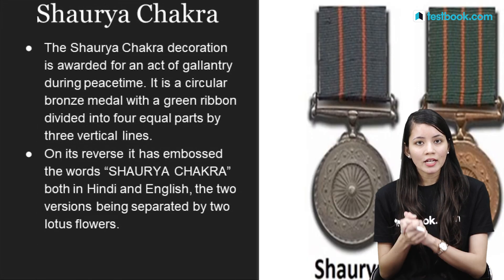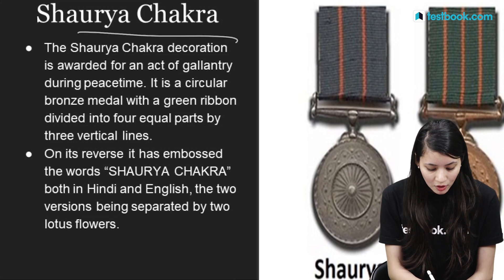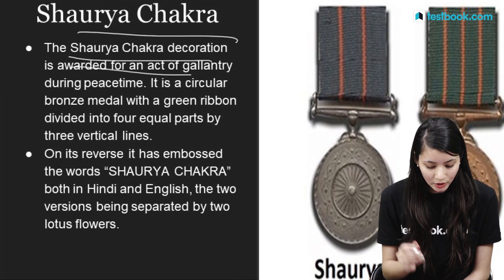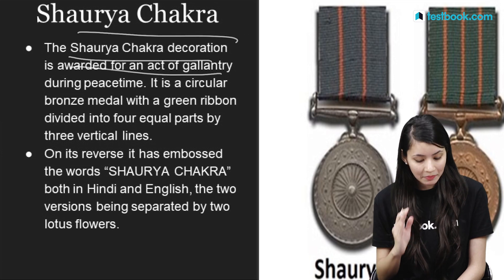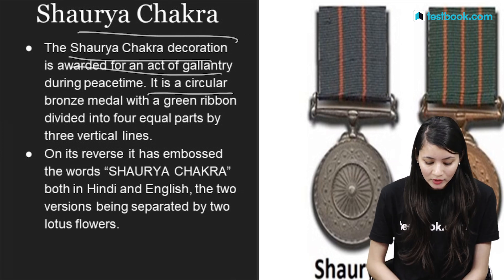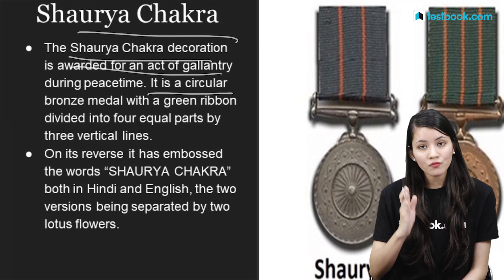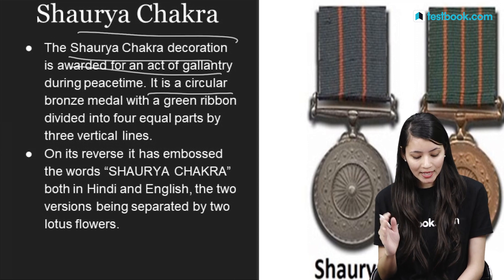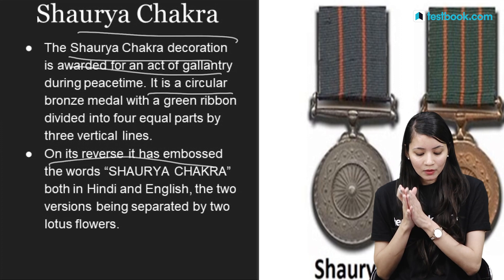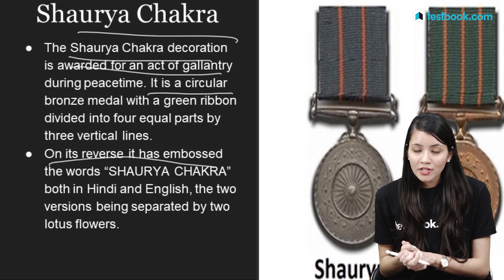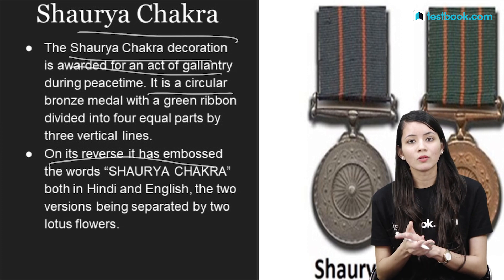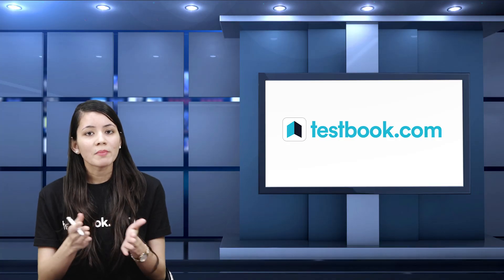Shaurya Chakra is a circular bronze medal with a green ribbon divided into four equal parts by three vertical lines. On the reverse, the words 'Shaurya Chakra' are embossed in both Hindi and English, separated by a lotus flower.